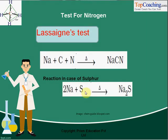Next is the test for nitrogen. For example, if we want to see whether the organic compound is an amine or not, Lassaigne's test is what we perform. This test is used for the presence of nitrogen, sulfur, and halogens. For this test, first of all we prepare the basic extract called the sodium fusion extract.